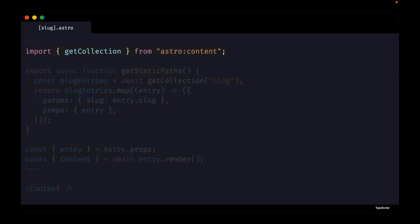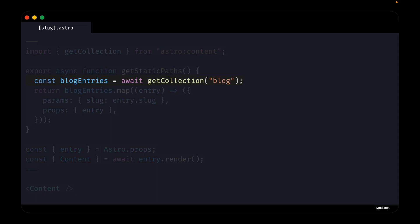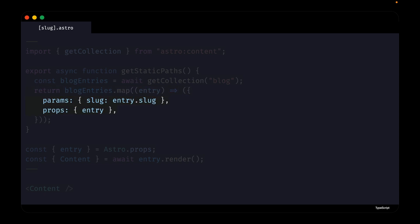First, we are importing the getCollection function from astro:content. Next, we are exporting an async function called getStaticPaths, which Astro provides — this function is what Astro uses to generate dynamic routes. Inside getStaticPaths, we await the getCollection function, which returns all of the posts from the blog content collection. Then we use .map to iterate over the blog posts, returning an object with two properties. The first is a params property which contains the slug of our blog post — Astro expects the slug since we named this file slug.astro, and by default Astro will use the file name of each post for the slug.